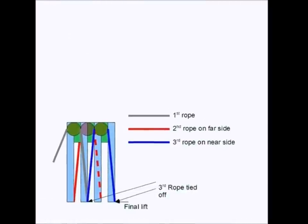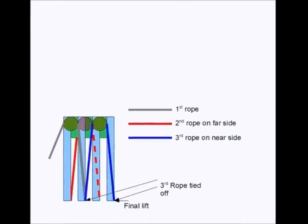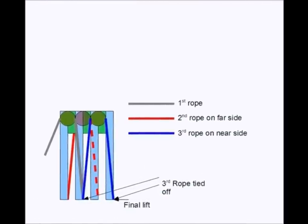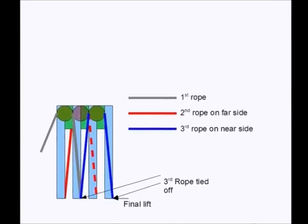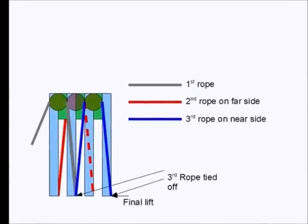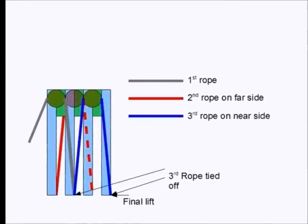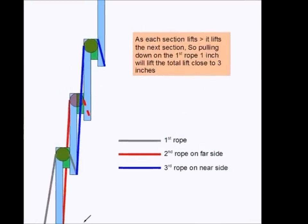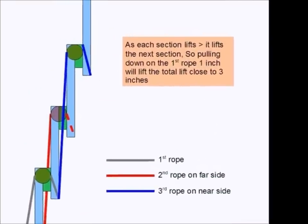More stages can be added to the lift system. In this diagram, the blue rope is tied to the bottom of the second stage, over the pulley of the third stage, and to the bottom of the fourth stage. When the gray rope is pulled down, the entire lift goes up.